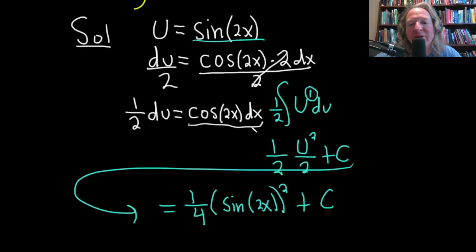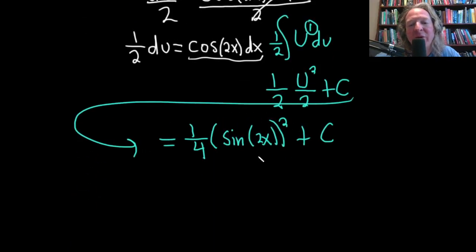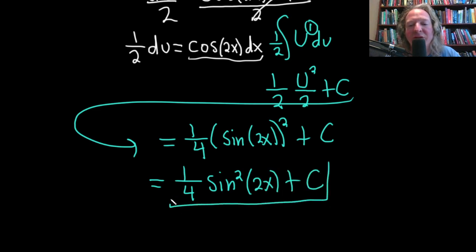There's x's here. So we go back to sine. You can write this a different way. You can write this as 1 fourth sine squared of 2x, and then plus our constant of integration, capital C. And again, other ways to do this problem, you can let u be cosine, and you can also use a trig identity.